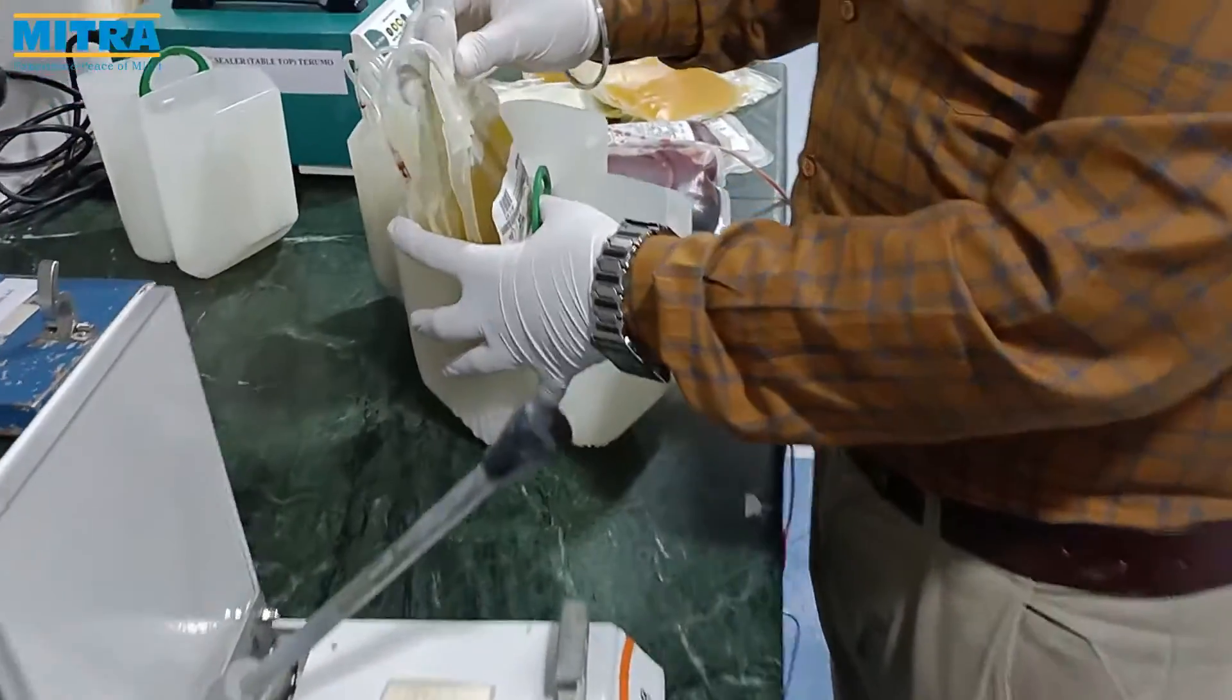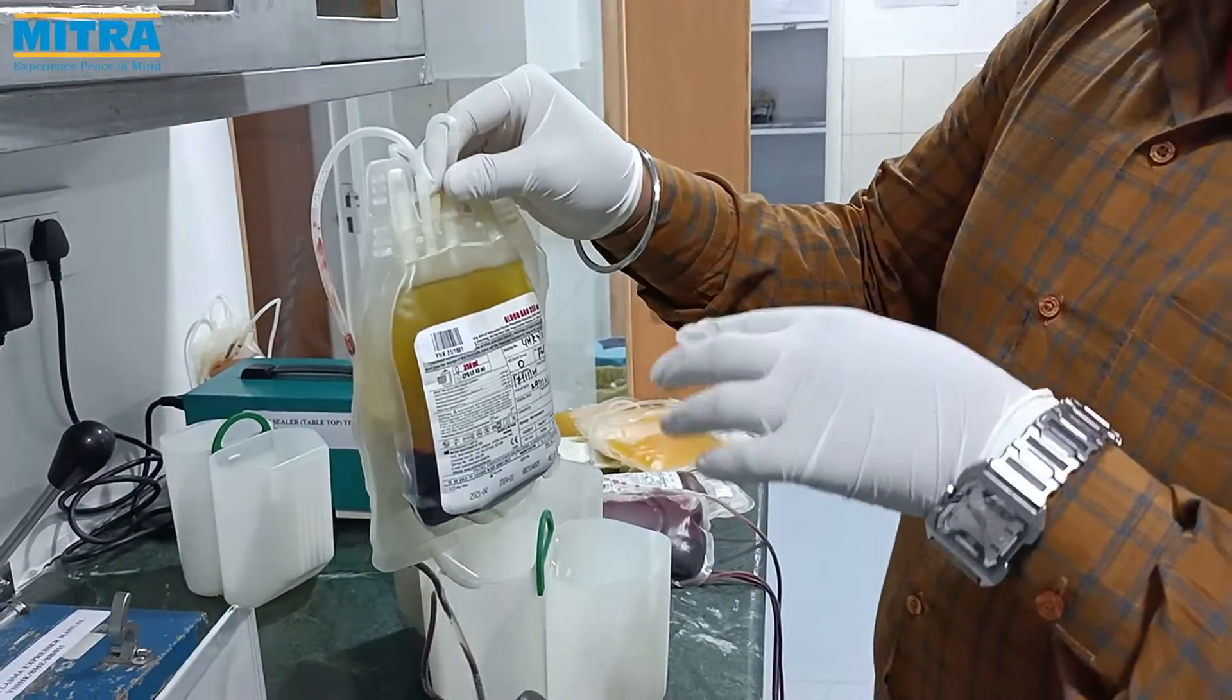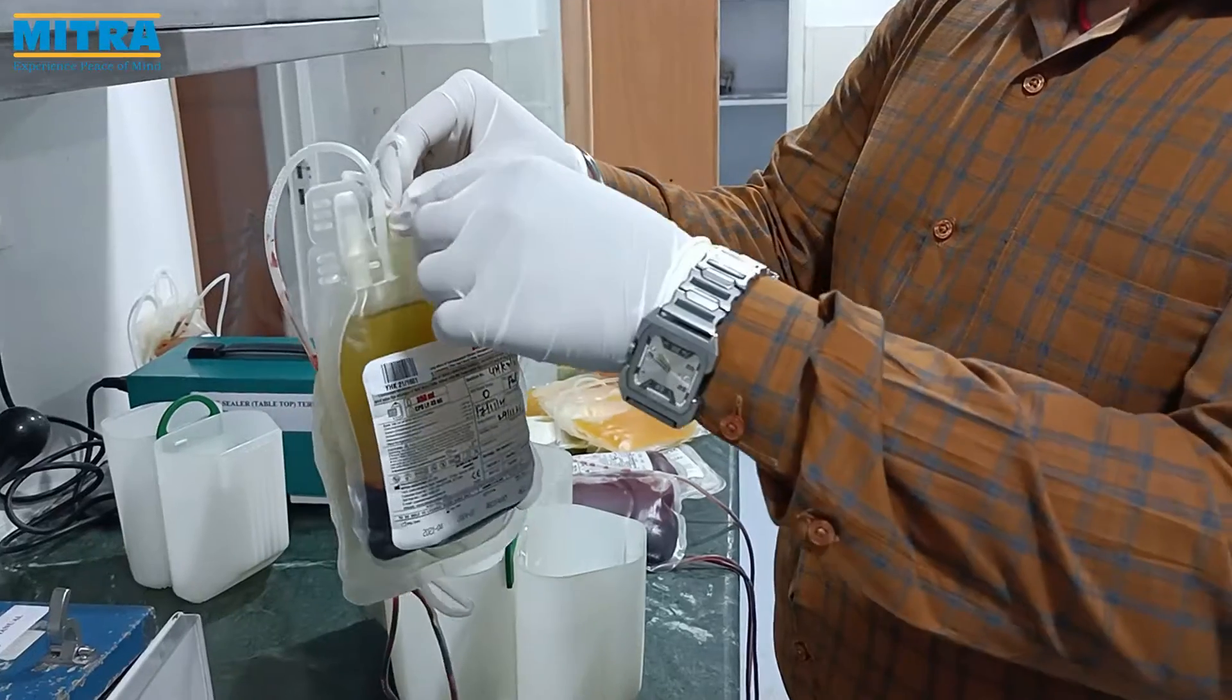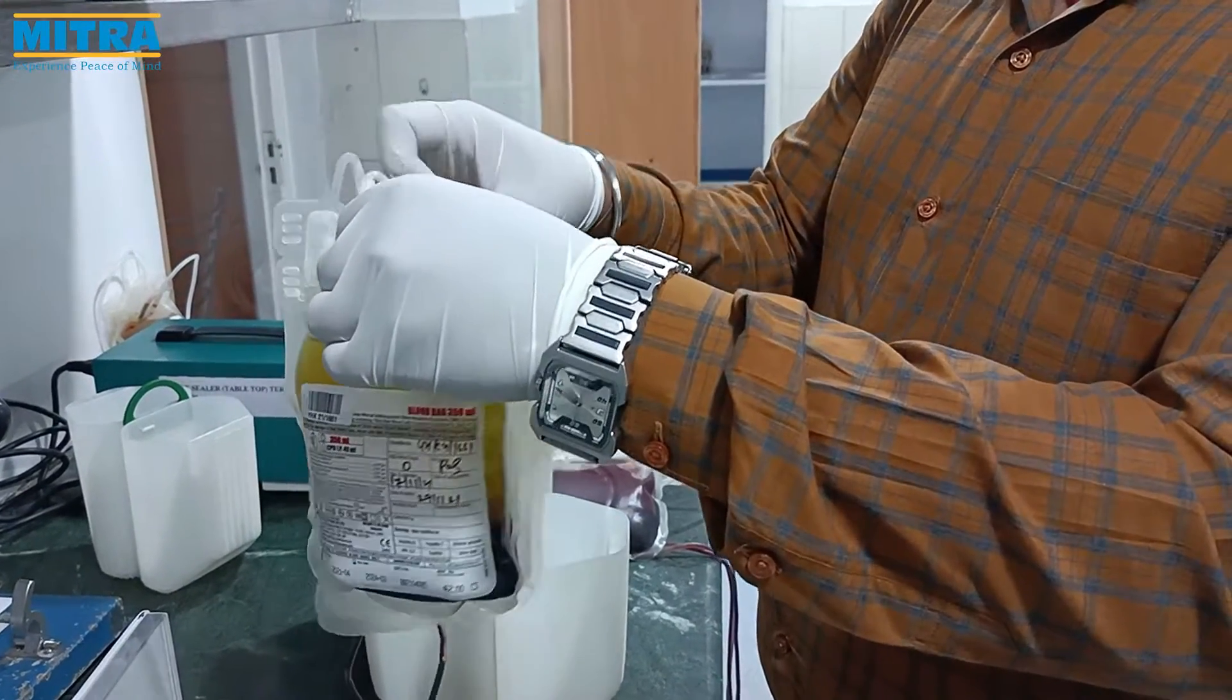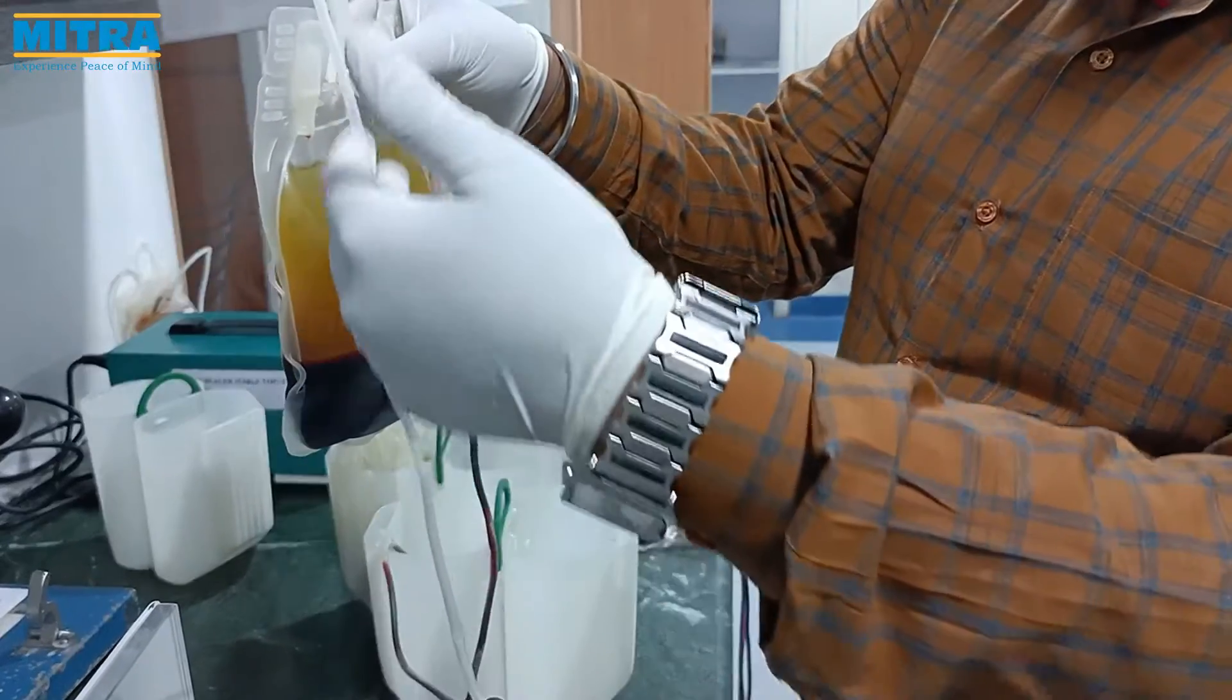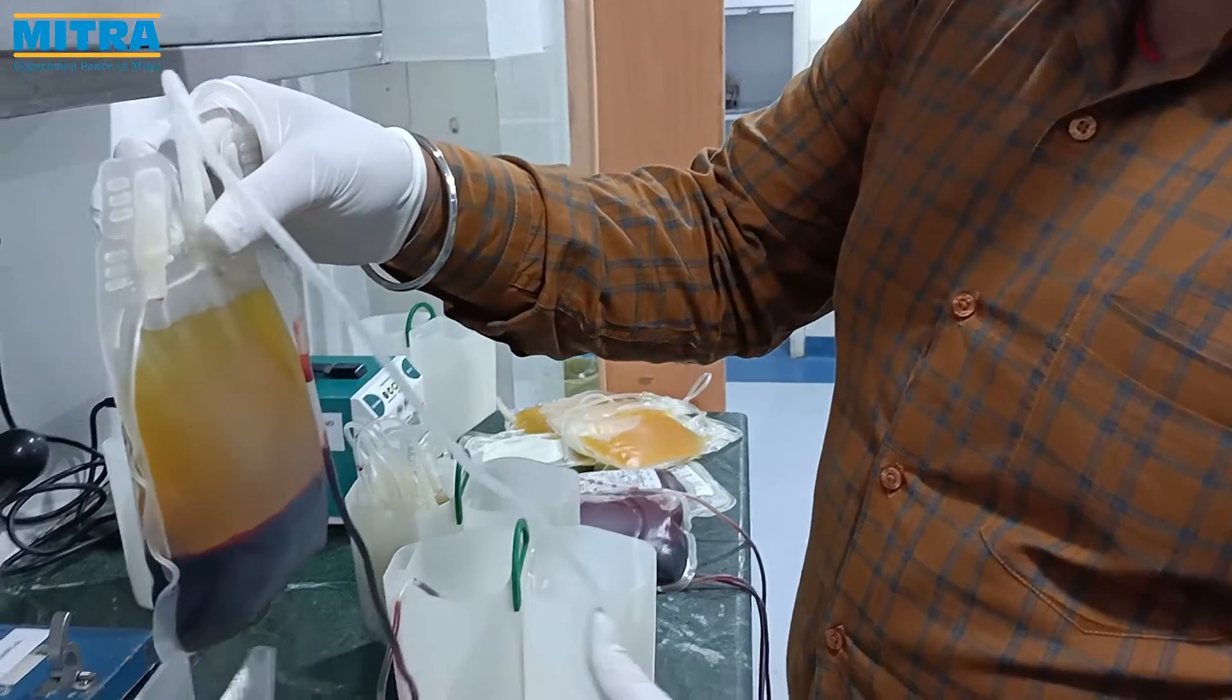Remove the blood bag from centrifuge buckets and check for sedimentation of RBC and contamination of RBC. If the sedimentation is good without any contamination of the RBC, place the blood bag into the manual separator equipment as shown in the video.